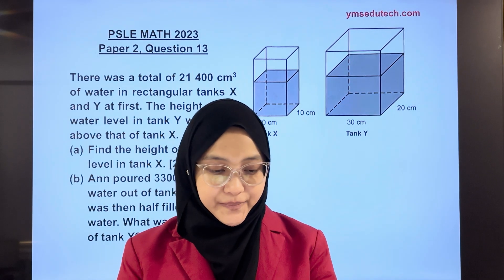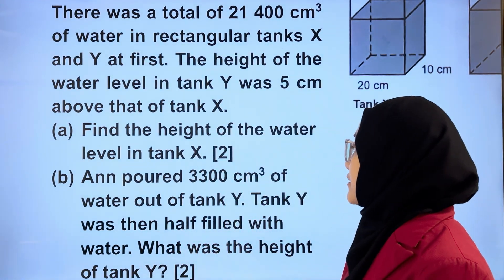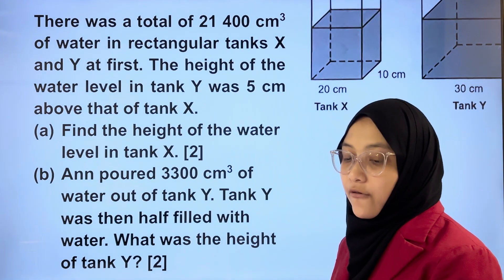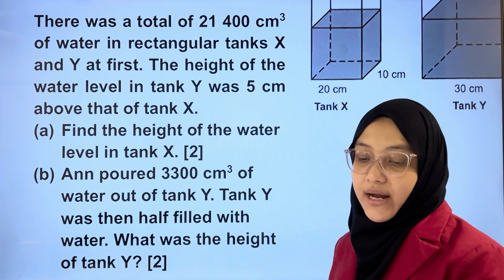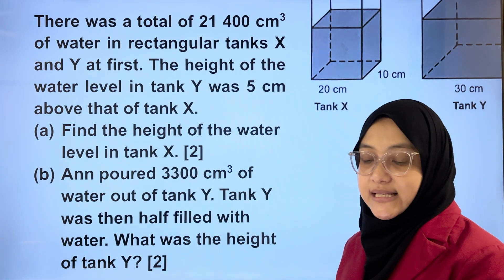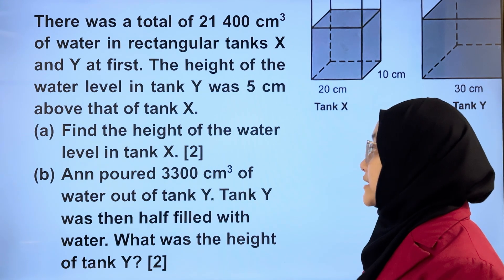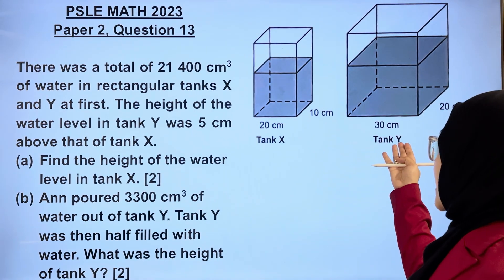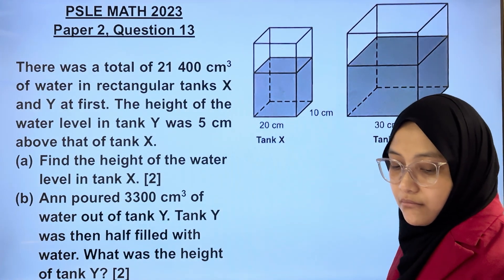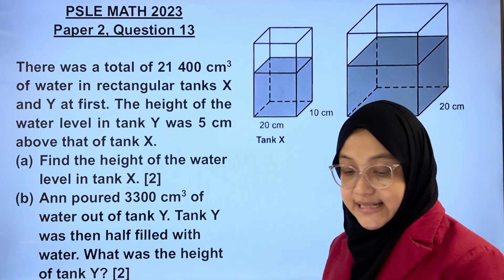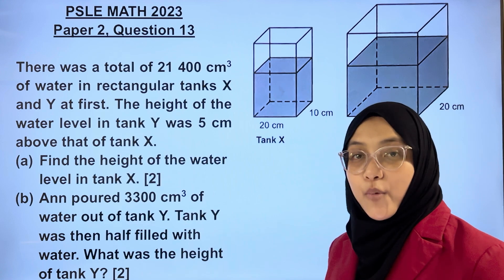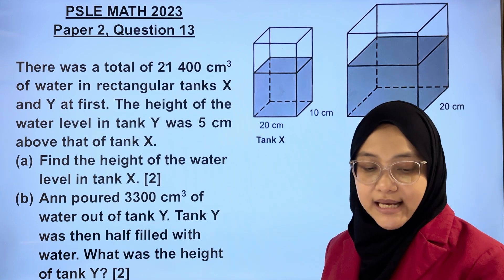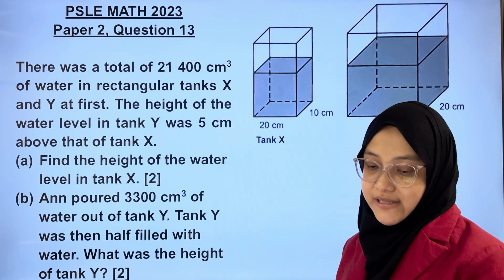Let's read the question together. There was a total of 21,400 cubic centimetres of water in rectangular tanks X and Y at first. The height of the water level in tank Y was 5 cm above that of tank X. This is tank Y and this is tank X. Part A: Find the height of the water level in tank X. Part B: Remove 3,300 cubic centimetres of water out of tank Y. Tank Y was then half-filled with water. What was the height of tank Y?